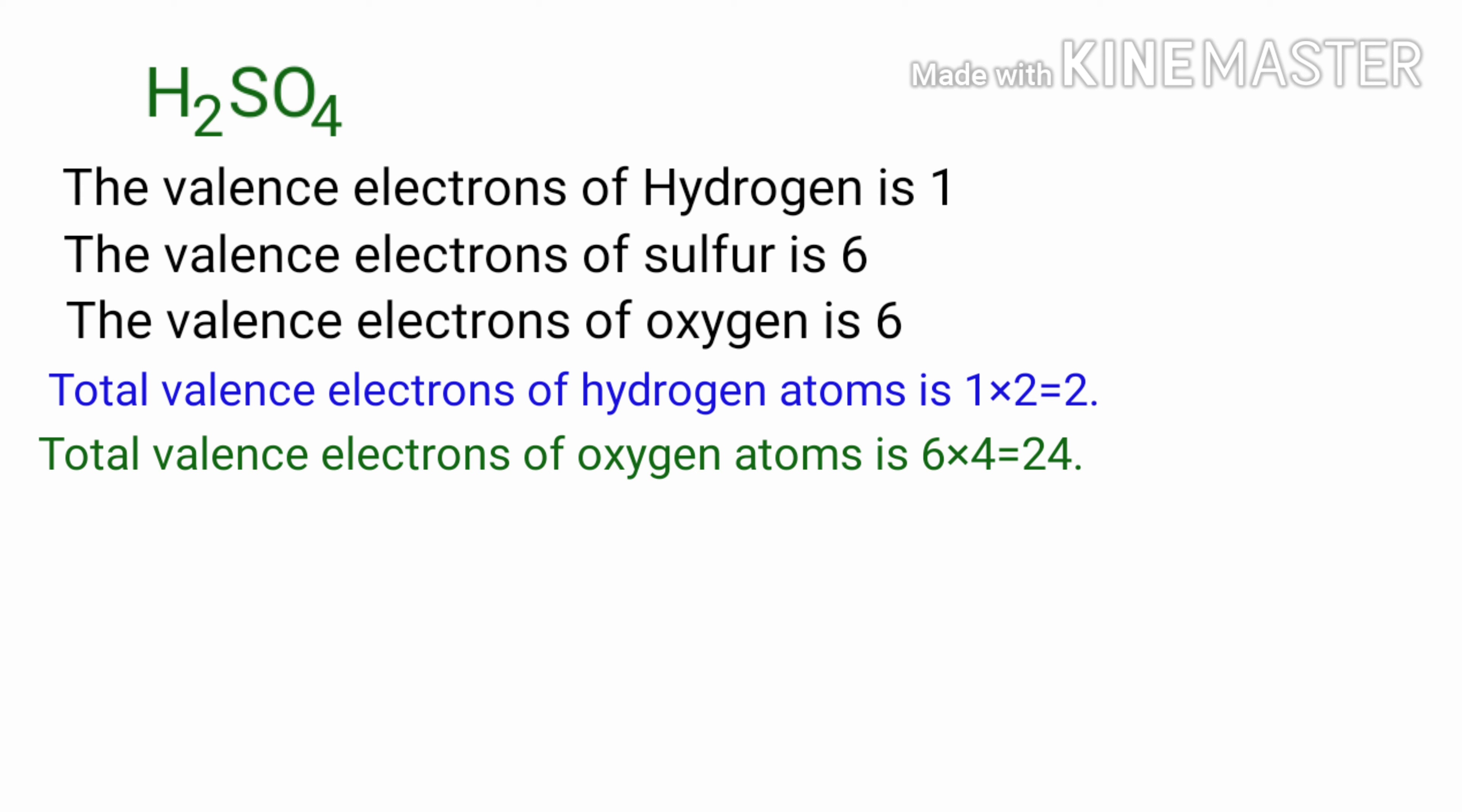There are four oxygen atoms present. So the total valence electrons of oxygen is 6 into 4, that is equal to 24.